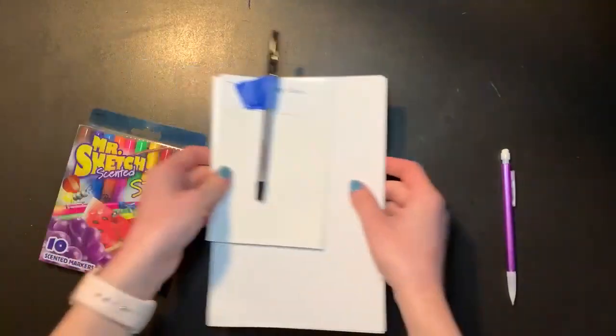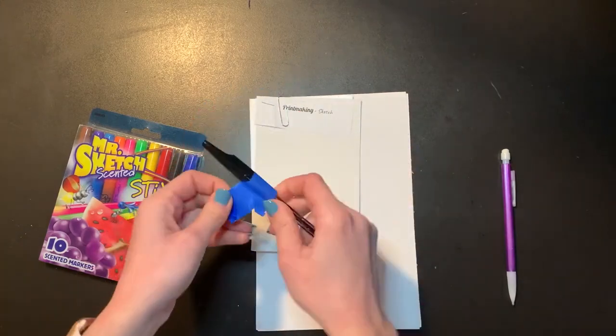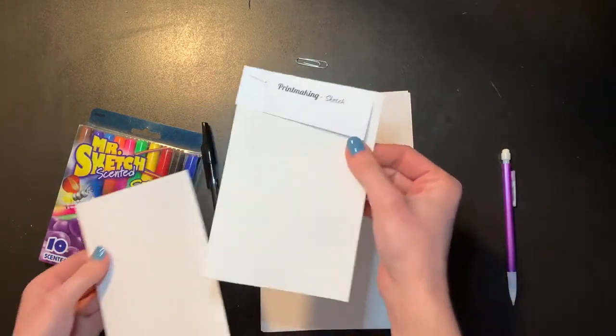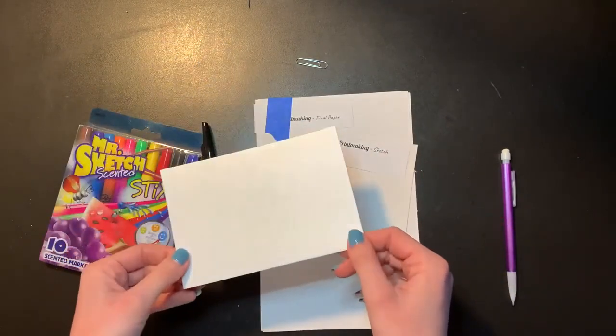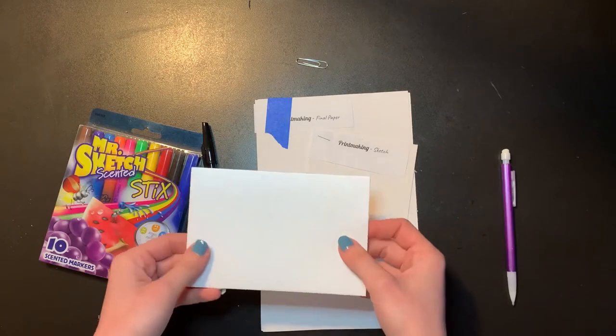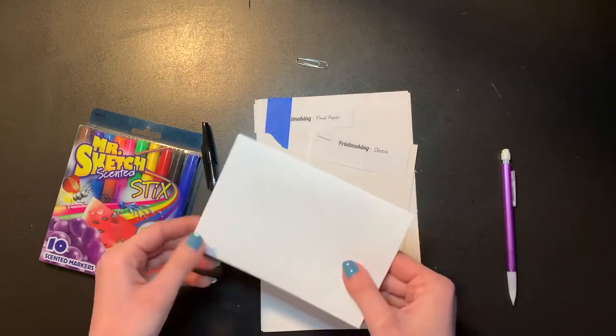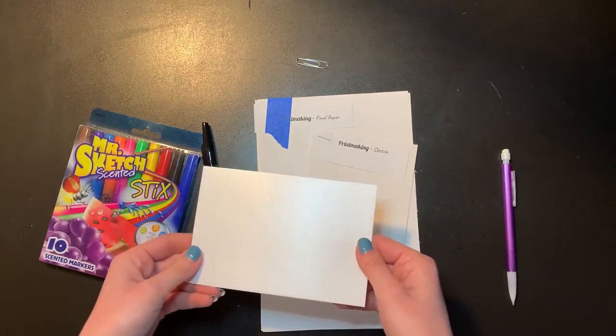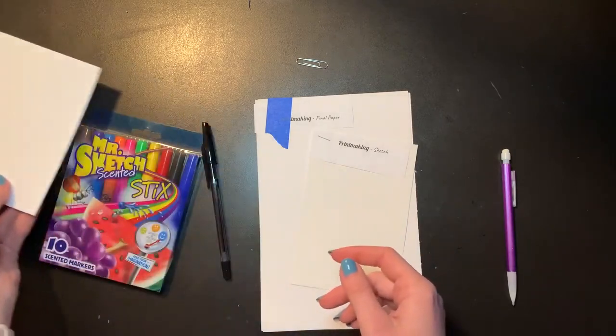In your printmaking materials, you should have a ballpoint pen. You can take the tape off of that because we don't need it anymore. We also have our printmaking sketch paper. We have our printmaking plate—this is our styrofoam plate. You want to be careful with this. Try not to bend it or dent it at all. I dented mine a little bit with my paper clip, but that's okay. This is what we're going to be using to draw our actual printmaking assignment on, but we're going to leave that for now.